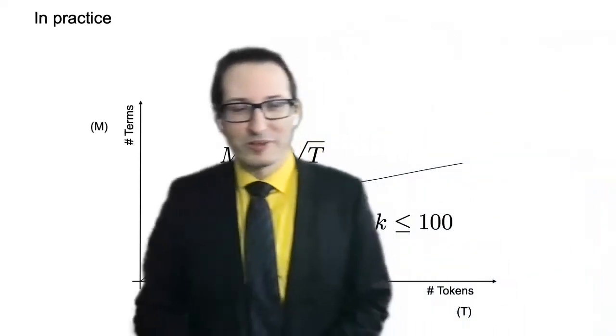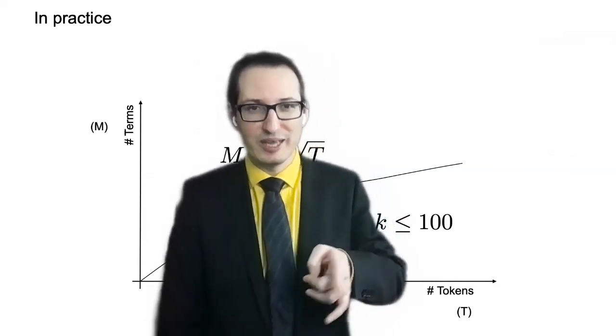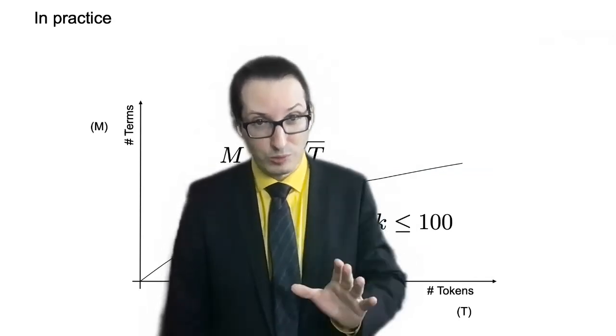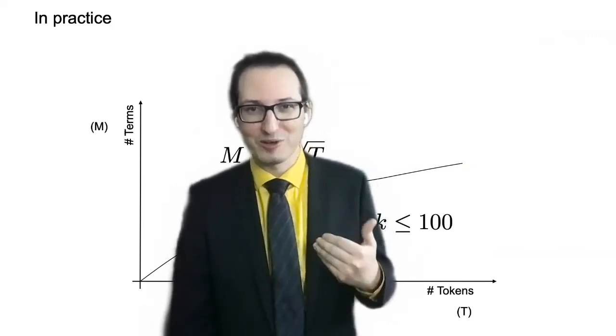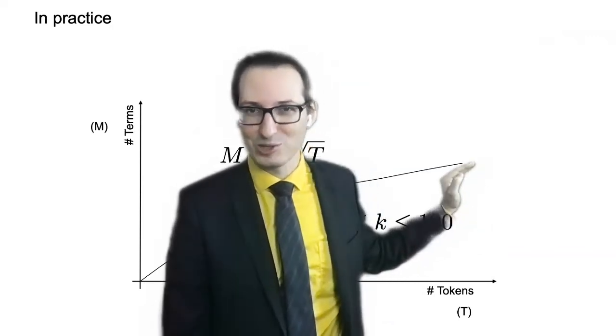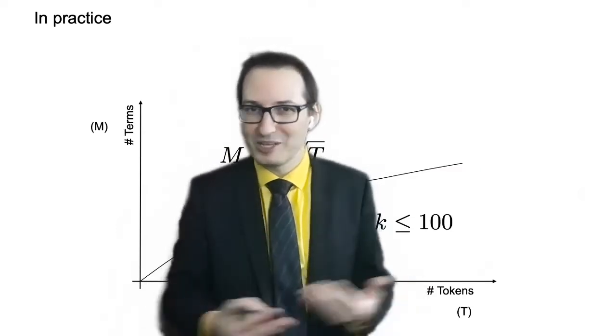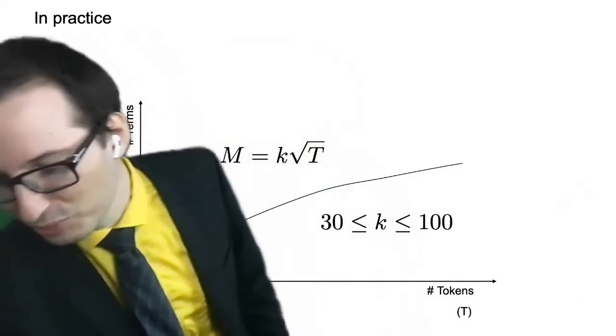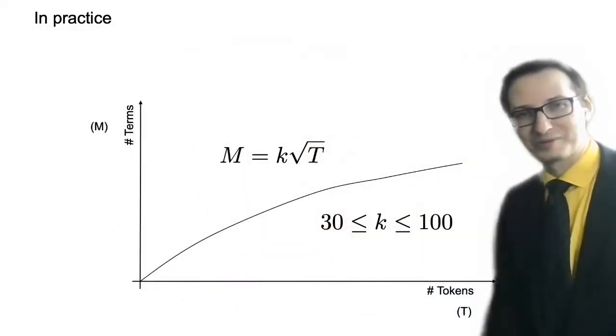So this is called Heap's Law, H-E-A-P, Heap's Law, that the number of terms grows square-rootedly with the number of tokens. And here you have a surprise because yeah that's not capped by the number of words in the English language. In the real world it's just the square root and this is empirical. This is really just something that we observe. It didn't come from some theory or something. It's just that we tried the linear regression and this is what we found out, turns out to be the square root.